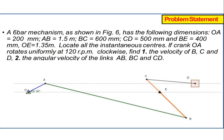This is the problem statement. A 6-bar mechanism has the following dimensions: OA = 200 mm, AB = 1.5 m, BC = 600 mm, CD = 500 mm, BE = 400 mm, and OE = 1.35 m. You have to find all the ICRs using the ICR method.